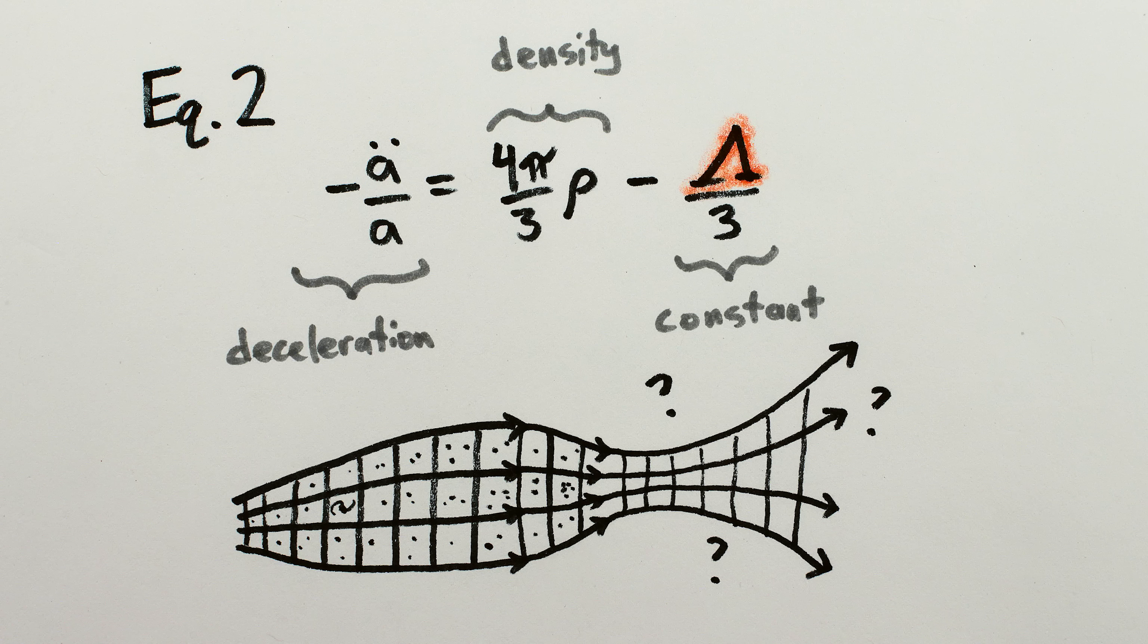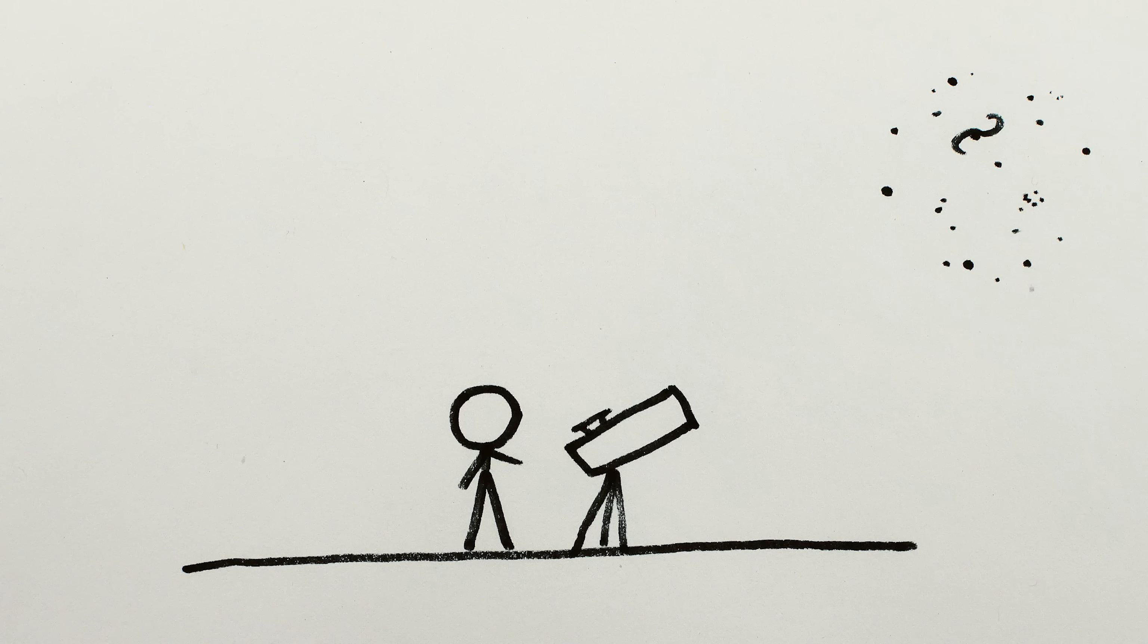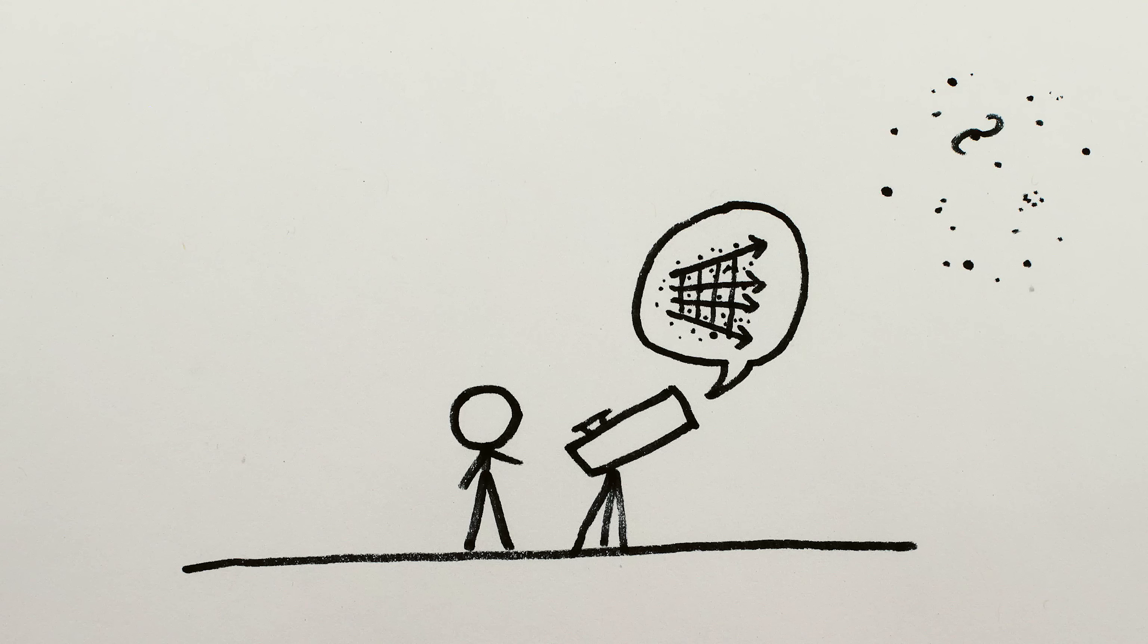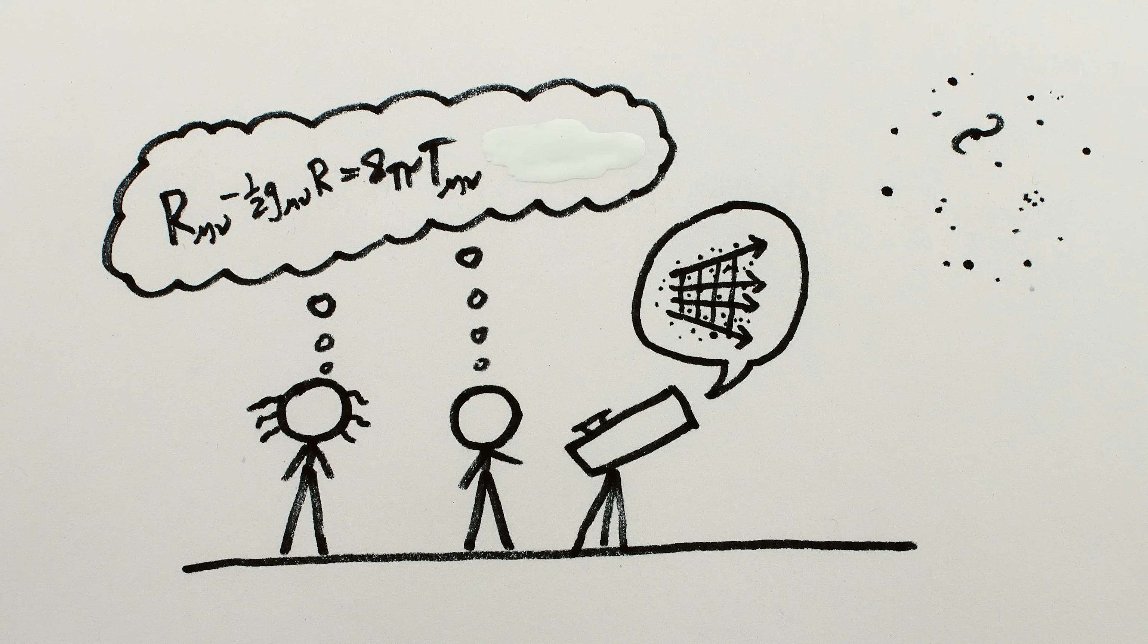So that's the solution Einstein didn't see. Later, once astronomers took sufficiently detailed measurements, it turned out that the universe was indeed expanding. So Einstein's equations didn't appear to have any need for the extra term he had added.